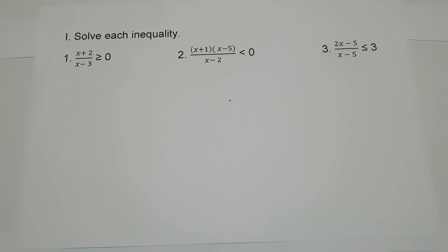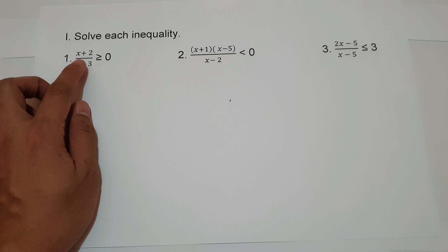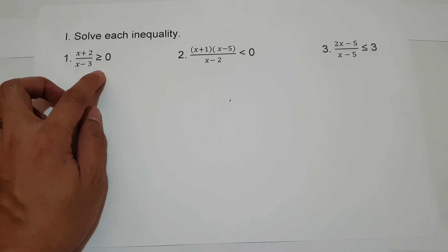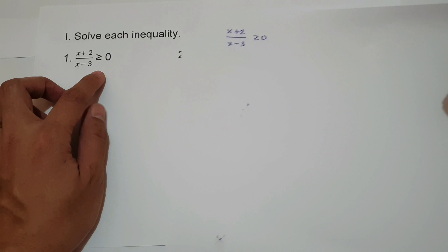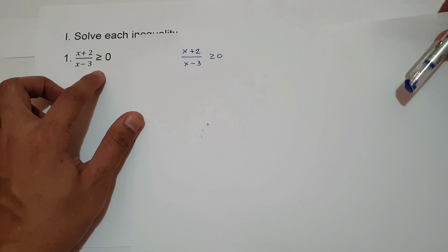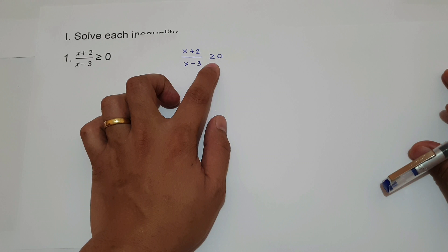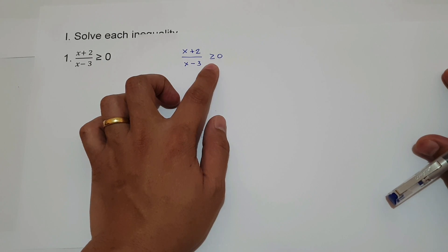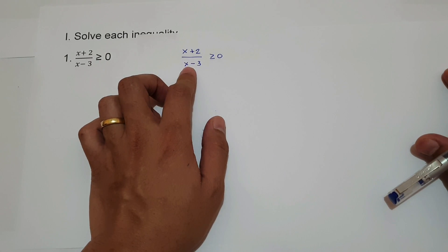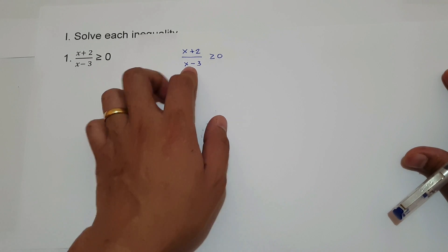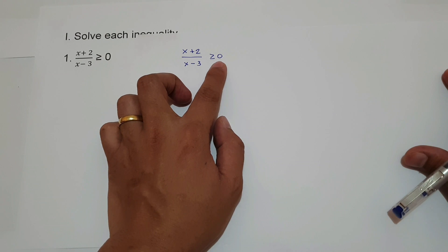For example, number 1, we have x plus 2 over x minus 3 greater than or equal to 0. The inequality symbol is greater than or equal, meaning if you're going to simplify this expression, the result must be positive, because all positive numbers are greater than 0.